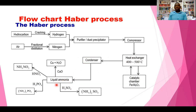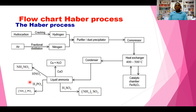Looking at the uses of ammonia: ammonia will react with sulfuric acid to form ammonium sulfate, and ammonia will also react with nitric acid to form ammonium nitrate. These are fertilizers and represent one of the major uses of ammonia. Ammonia is also a reducing agent — when it reacts with copper oxide, it reduces copper oxide to copper metal and water, and nitrogen is also produced. The observation here is that the black solid changes into a brown solid.